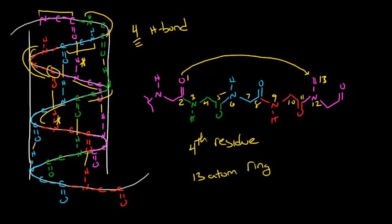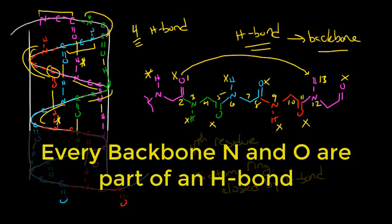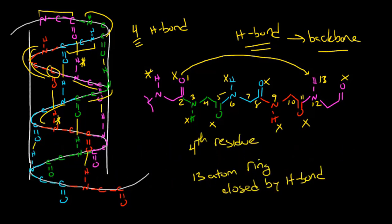This is why alpha helices form—this is the hydrogen bonding pattern that forms within the backbone. The most important thing to take home is that every single carbonyl within the alpha helix, and all of the nitrogens within the alpha helix, all end up being part of a hydrogen bond, and all of these hydrogen bonds are within the backbone. So it's important to recognize that all backbone atoms end up tied up in hydrogen bonds that stabilize secondary structure. In the next video, we're going to explore how the side chains can influence the properties of the alpha helix itself.